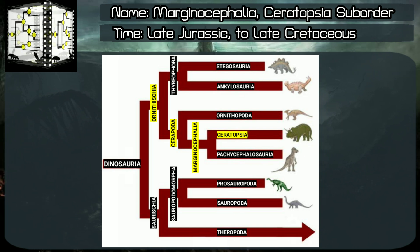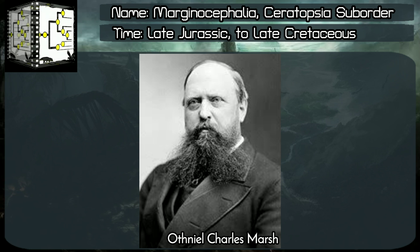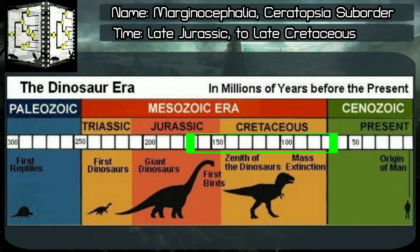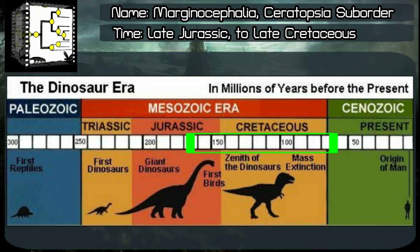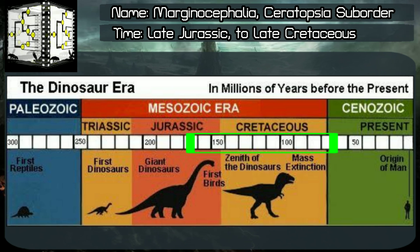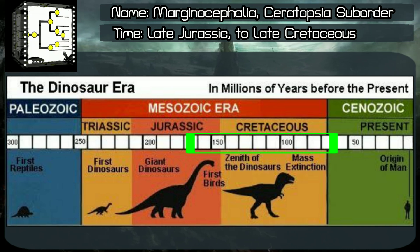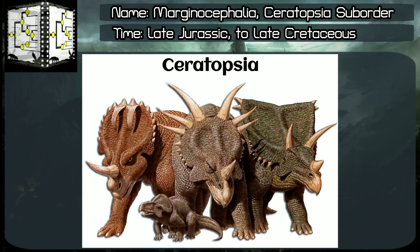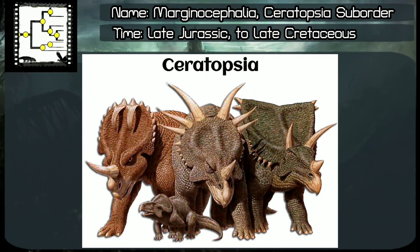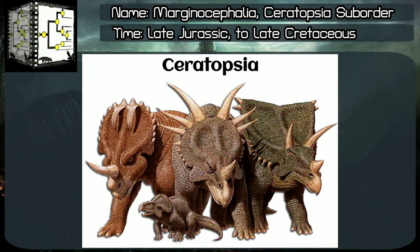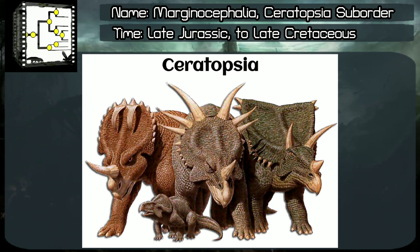Ceratopsia suborder, classified by Othniel Charles Marsh, year 1890. Time range: Phanerozoic Aeon, Mesozoic Era, late Jurassic to late Cretaceous periods, something around 162 to 66 million years ago. From Greek, Ceratopsia means horned faces. They are herbivorous beaked dinosaurs. The well-known Triceratops is among them.